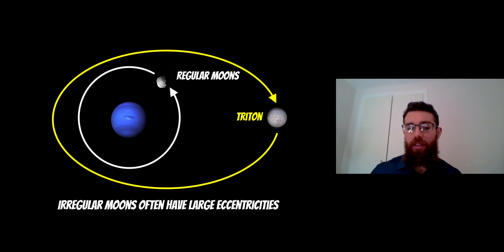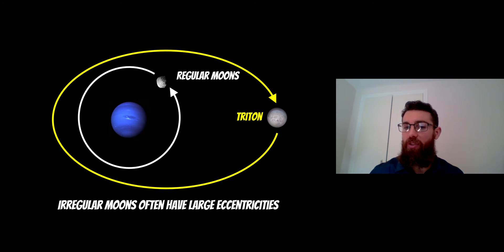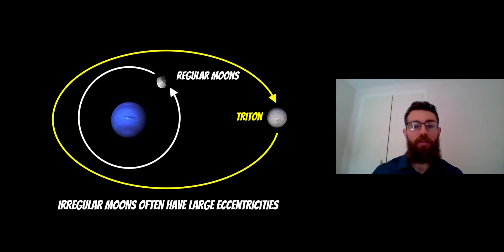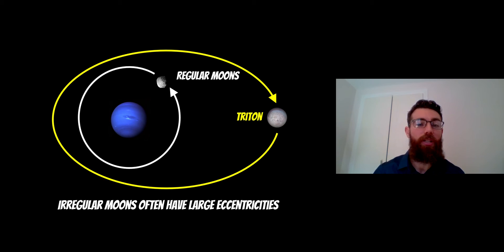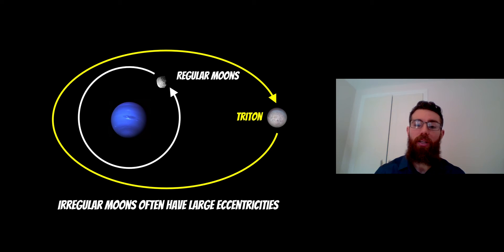You typically find that irregular moons also have very large eccentricities. When we talk about eccentricities, we mean how elliptical the orbit is around the planet. The white circle with the arrow represents a regular moon, and these normally have fairly circular orbits — they are not that elliptical because they formed with the planet; there is no reason for them to be elliptical unless they had some interaction post-formation. But irregular moons quite often have very elliptical orbits, as illustrated with Triton here, and this is another key feature of irregular moons.